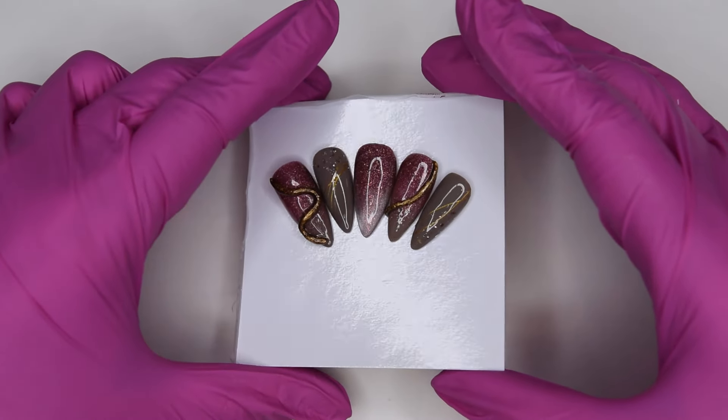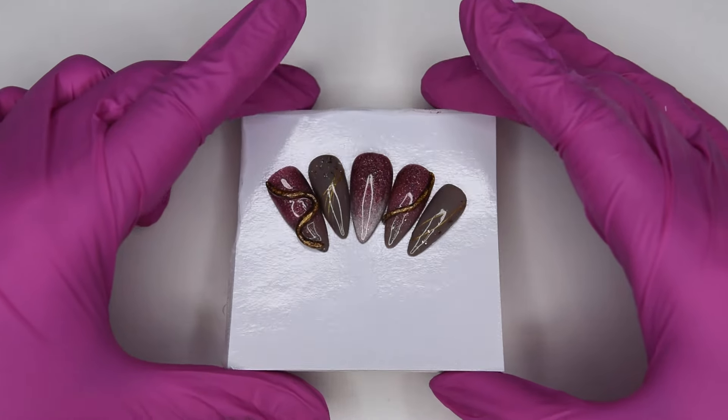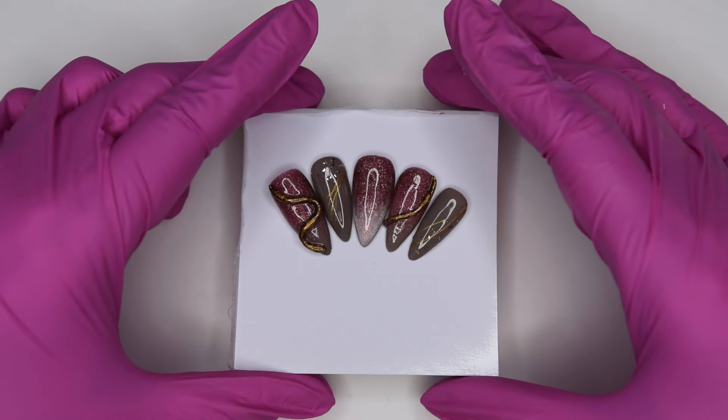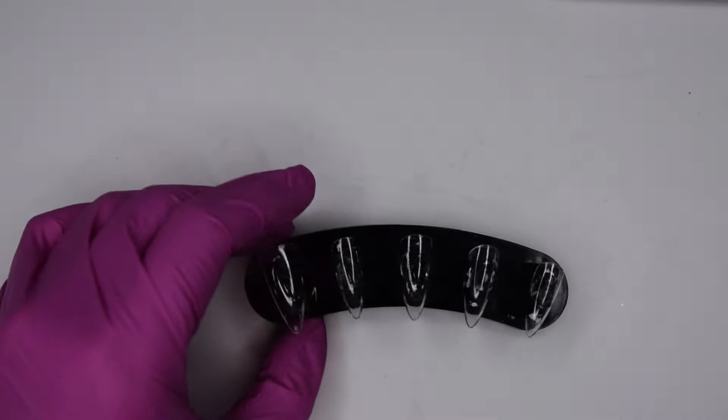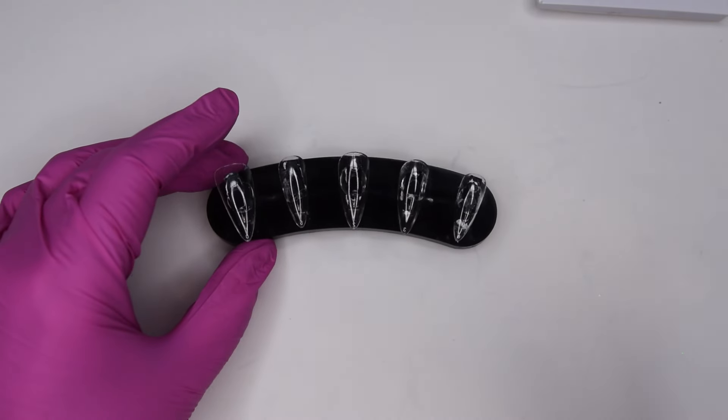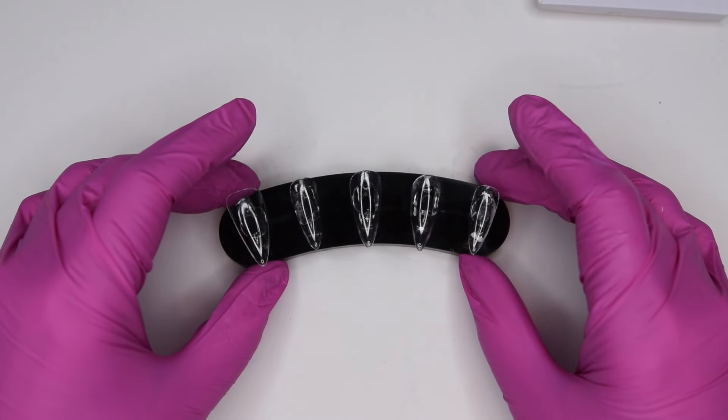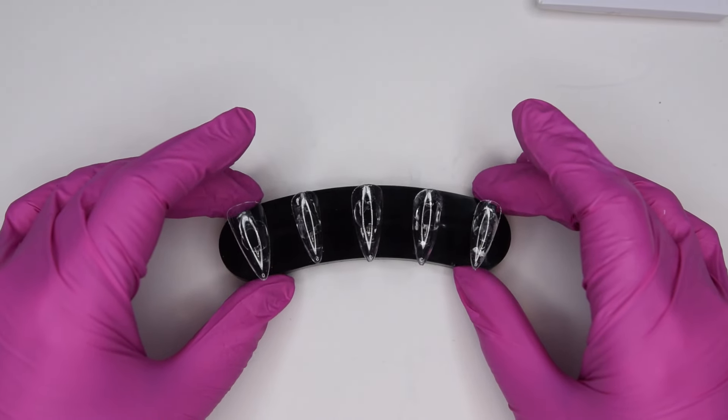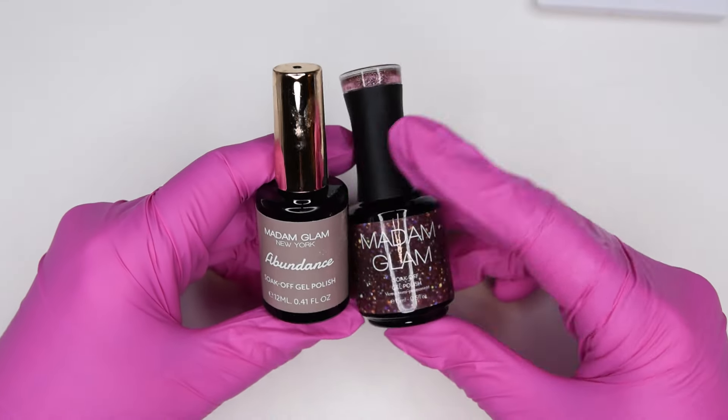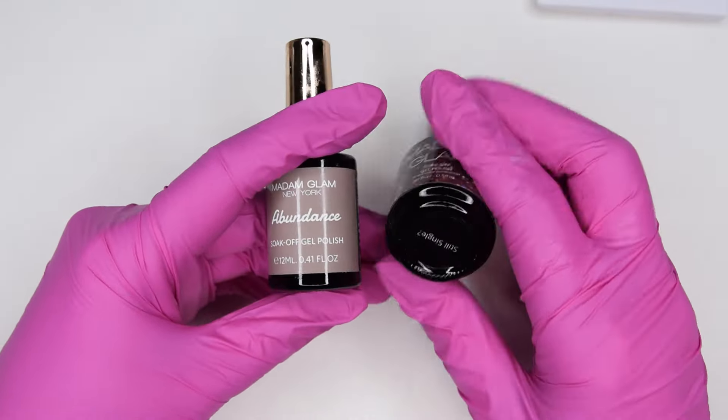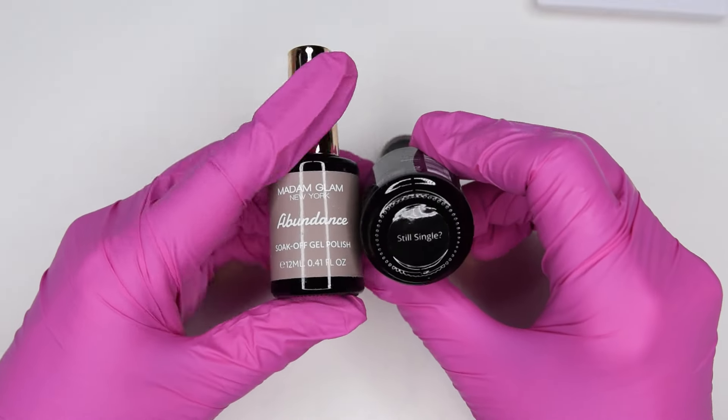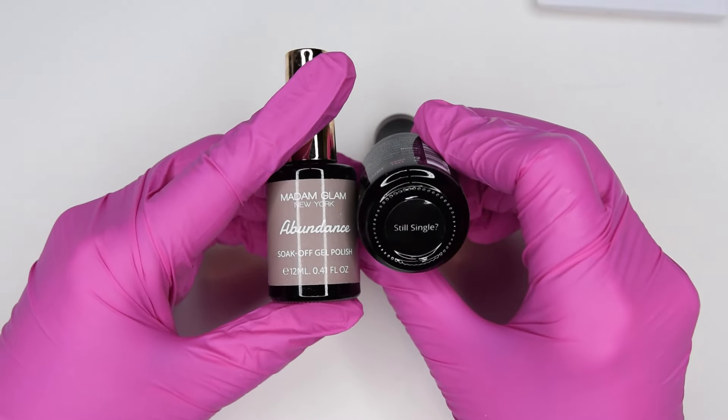You will go through the steps with me and see how I attach them after I have designed them. I will be using full soft gel tips from Inel Couture. These are the Mini Stiletto. And I am going to use colors from Madame Glam. This beige one called Abundance and the other one called Still Single.